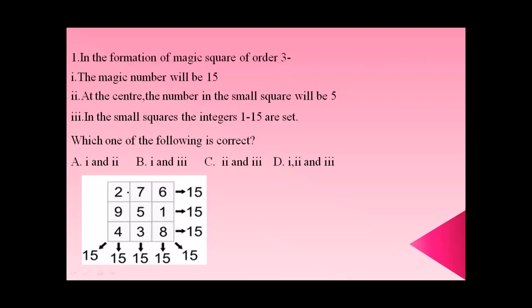If we divide the square into three parts along its length and breadth, we get nine small squares. The magic number is 15. If we arrange numbers 1 to 9 and add them horizontally, vertically, and diagonally, the sum is always 15. For example, 2 plus 7 is 9, plus 6 is 15. So 15 is the magic number — statement one is correct.